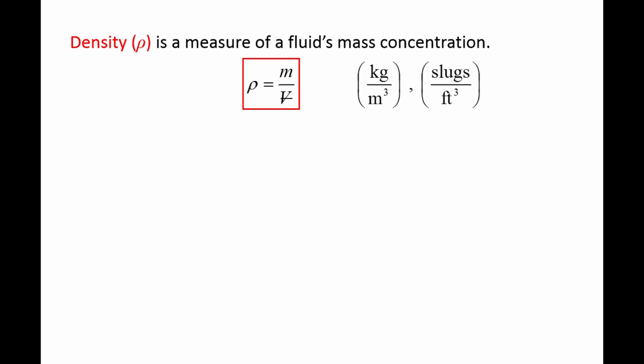It is defined as the mass of a fluid m divided by the volume it occupies, V. The SI units of density are kilograms per cubic meter, and the British gravitational units are slugs per cubic foot.